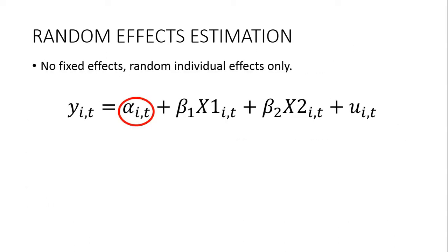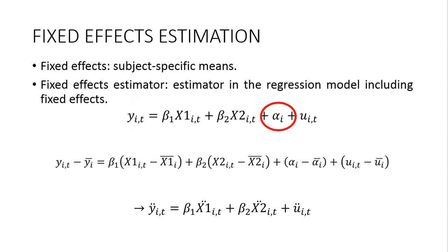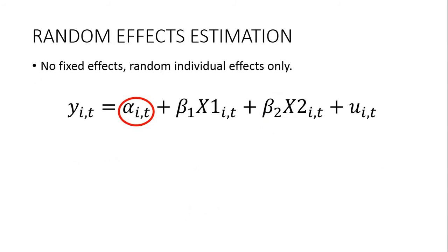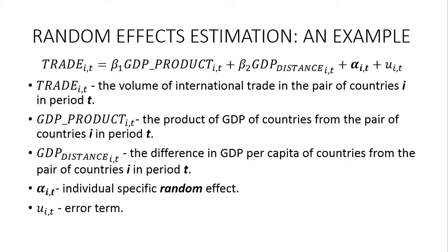Random effects estimation is a bit different. In the fixed effects model we assume alpha_i is time-invariant and group-specific. In random effects, we allow for random individual effects — we assume this effect is not the same for the same entity across different periods of observation, so alpha becomes a time-variant variable. All other variables are interpreted in the same way as in the fixed effects model.